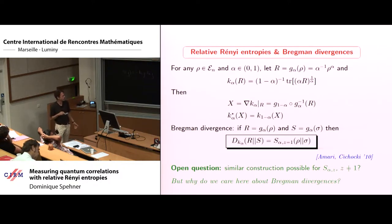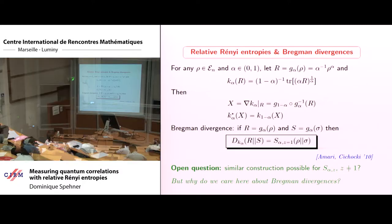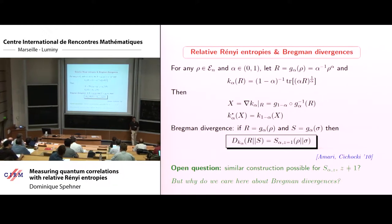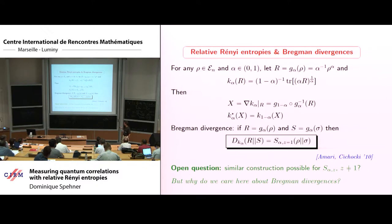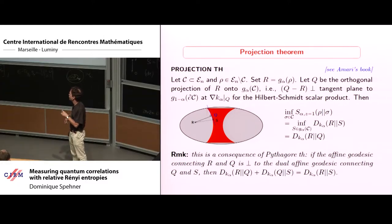You might ask: why do I care about Bregman divergence? For my purpose, because I want to study extremization. I will define entanglement as a relative entropy between my state and the closest separable state — I have an extremization problem. In Amari's book, if you have a Bregman divergence, you have a great tool for extremization: basically a projection theorem. This theorem tells you that the closest point in a set to rho is given by a projection such that Q minus rho should be perpendicular — in the Hilbert-Schmidt scalar product — to the tangent plane of the set in dual coordinates.